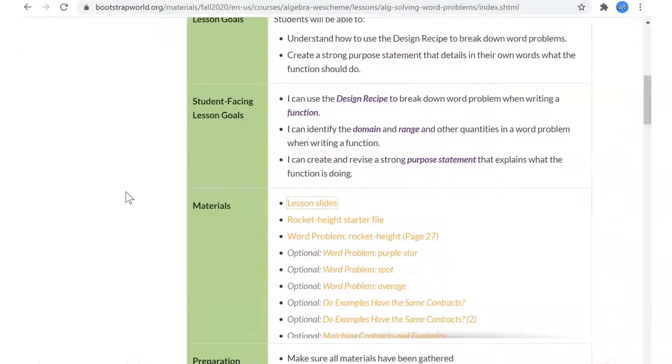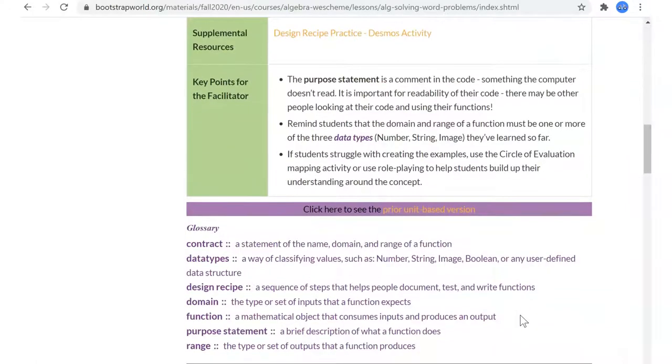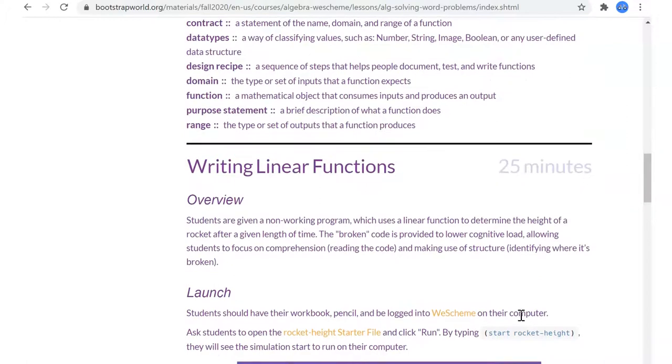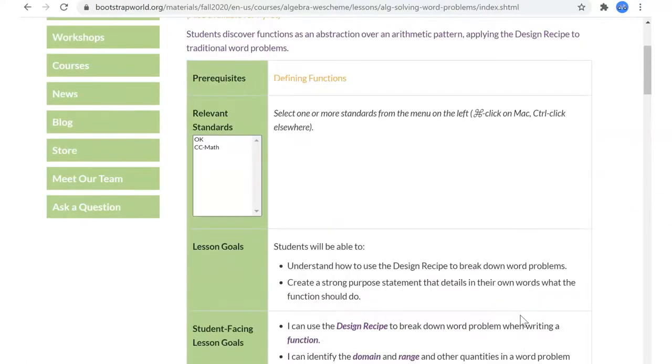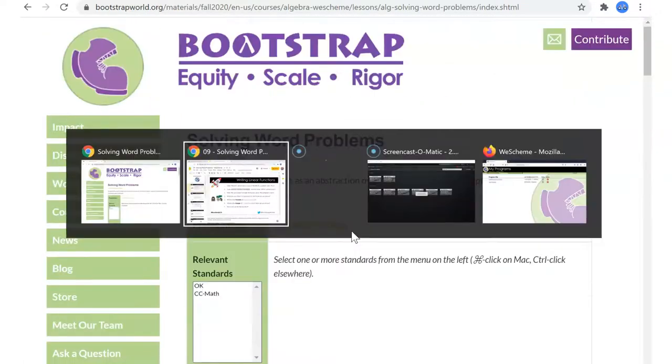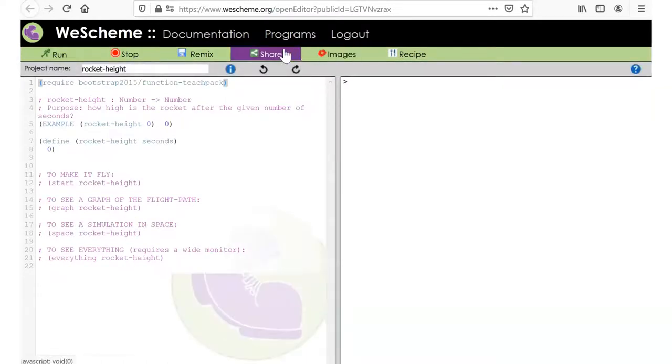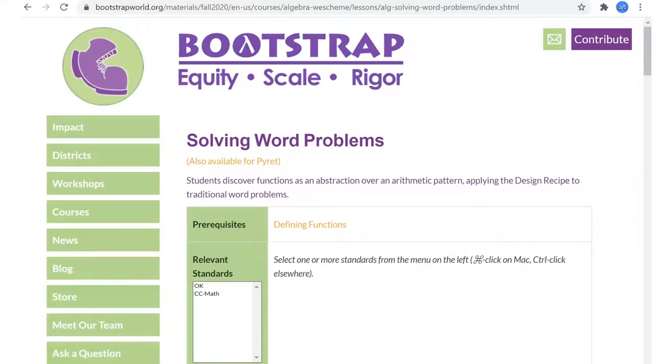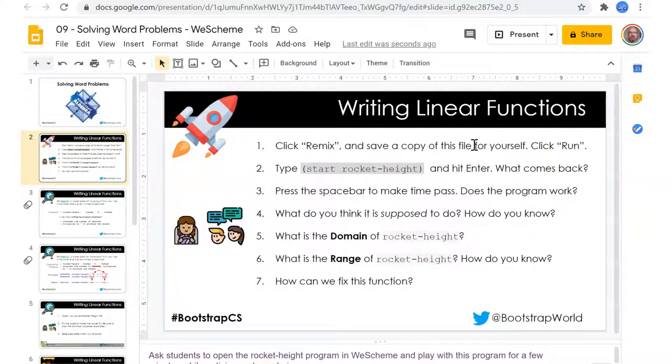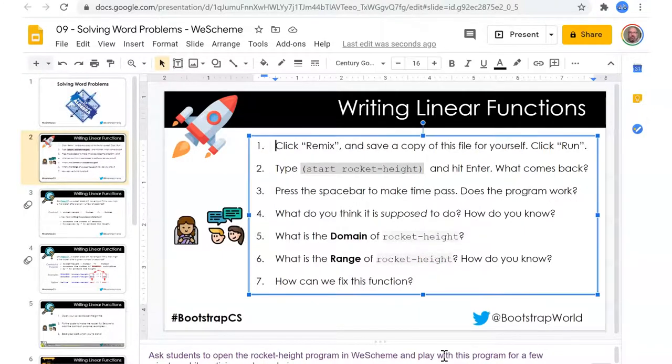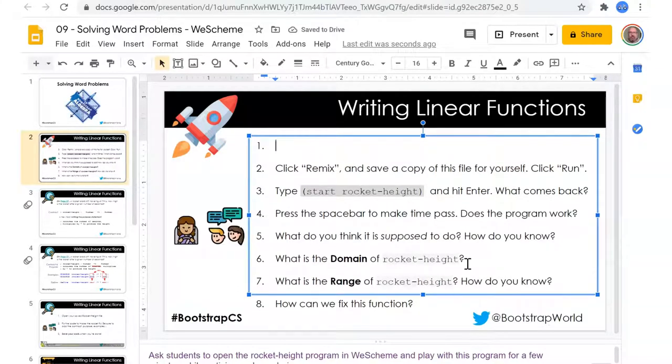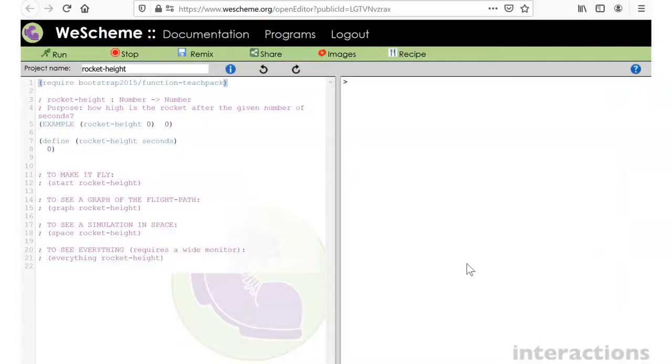Walk through the slides. We have 10. Remix and save a copy of this file. Let me know what this file is. Rocket height starter file. So let's go to WeScheme. Open the rocket height starter file.